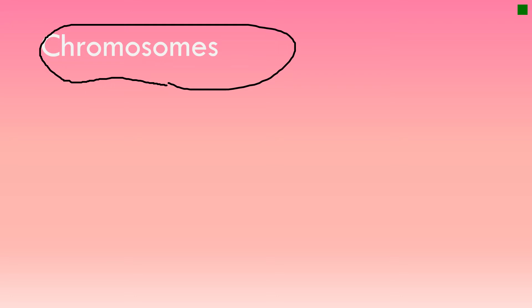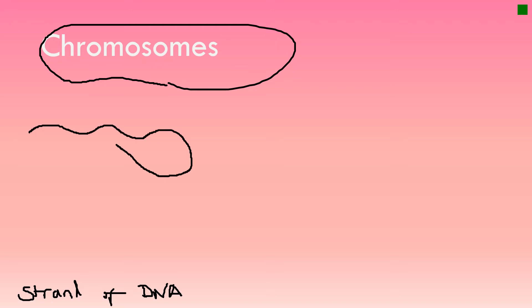Before answering the question on the test, it's fundamental that you understand what the term chromosome means. A chromosome is simply a strand of DNA — granted, it's a long strand of DNA and it codes for a lot of different things about you. Essentially, it's a strand of DNA. Back in the day, when your father's sperm met your mother's egg, it created you for the first time.